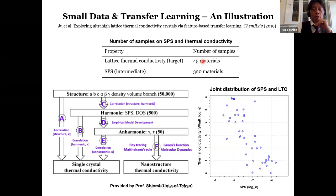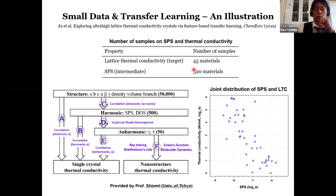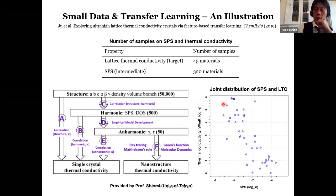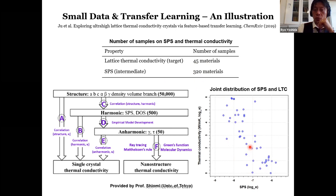スモールデータへのアプローチとして、無機化合物を対象にした熱伝導率（ラティスサーマルコンダクティビティ）の研究を紹介します。研究開始当初は熱伝導率に関するデータが全くなく、そこで熱伝導率に関連するスキャッタリングフェーズスペース（SPS）に注目し、第一原理計算を使って320点のデータを収集しました。SPSと熱伝導率の間には負の相関がありますが、相関は非常に弱いことが観測されます。